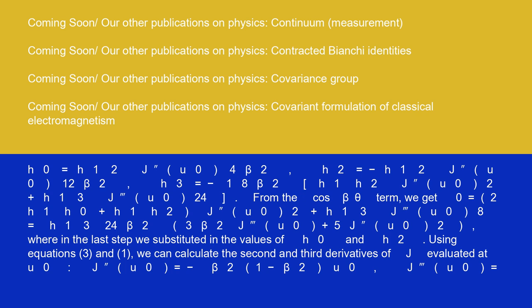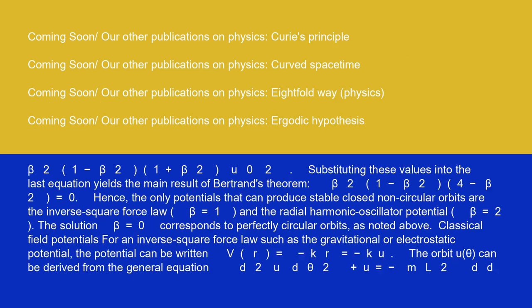From the cos(βθ) term, we get 0 equals 2h₁h₀ plus h₁h₂J''(u₀)/2 plus h₁³J'''(u₀)/8 equals h₁³/(24)β²(3β²J''(u₀) plus 5J'''(u₀)/2), where in the last step we substituted in the values of h₀ and h₂, using equations 3 and 1. We can calculate the second and third derivatives of J evaluated at u₀: J''(u₀) equals minus β²(1 minus β²)u₀, J'''(u₀) equals β²(1 minus β²)(1 plus β²)u₀².